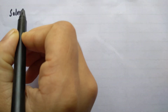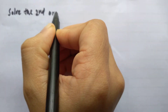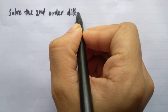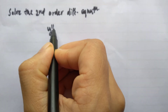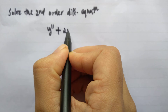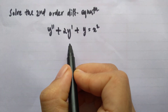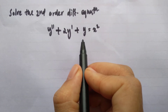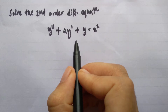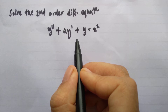Solve the second order differential equation: y double dash plus 2y dash plus y equals x square. We are given a second order differential equation which is not homogeneous. In order to solve an equation of this kind, we have to first find the complementary function and then we have to find the particular integral.